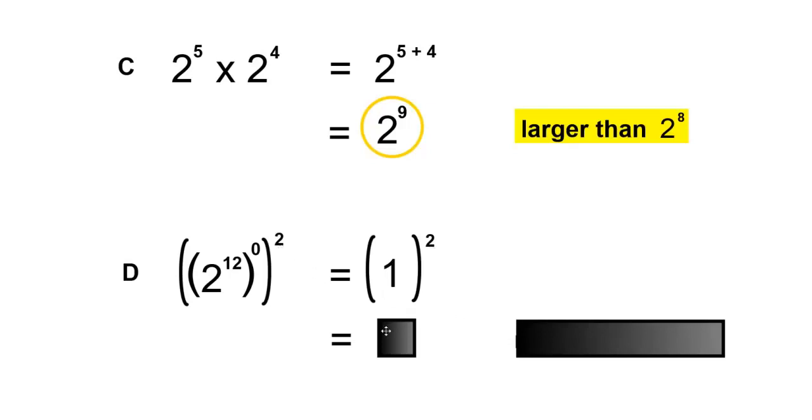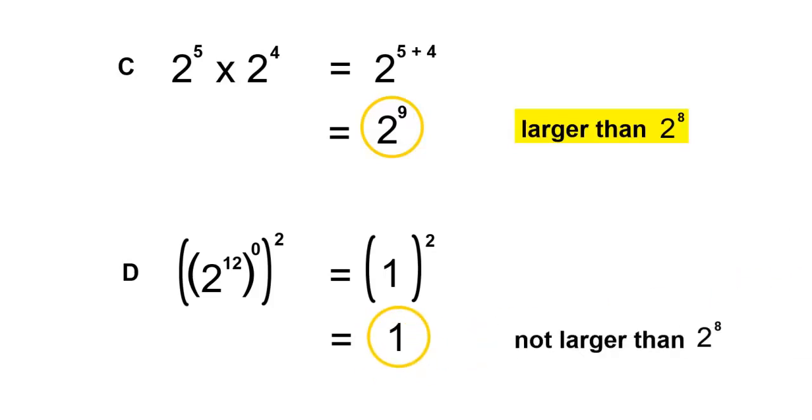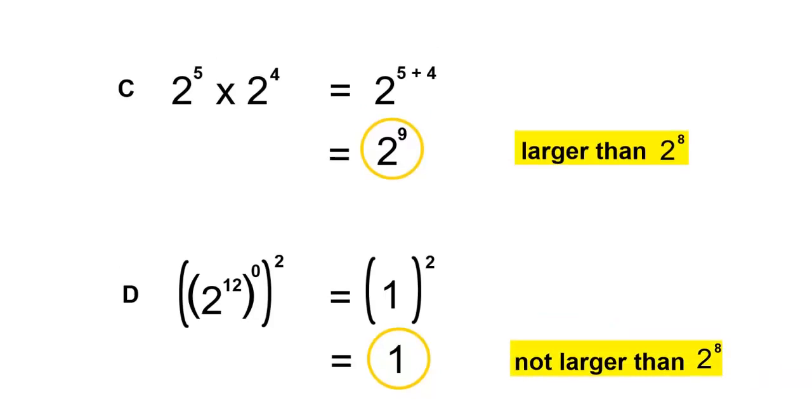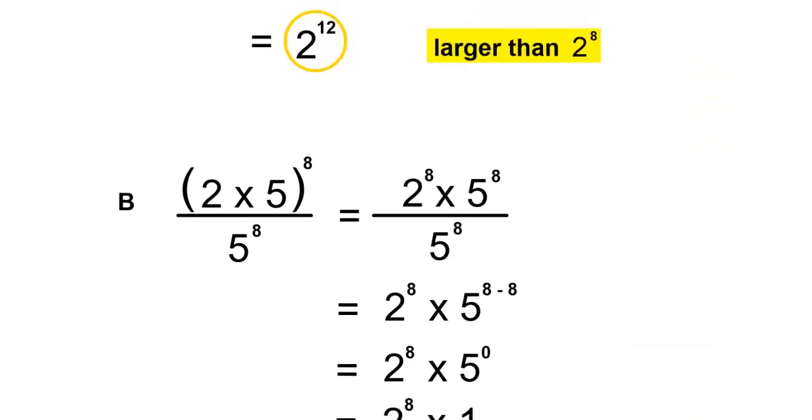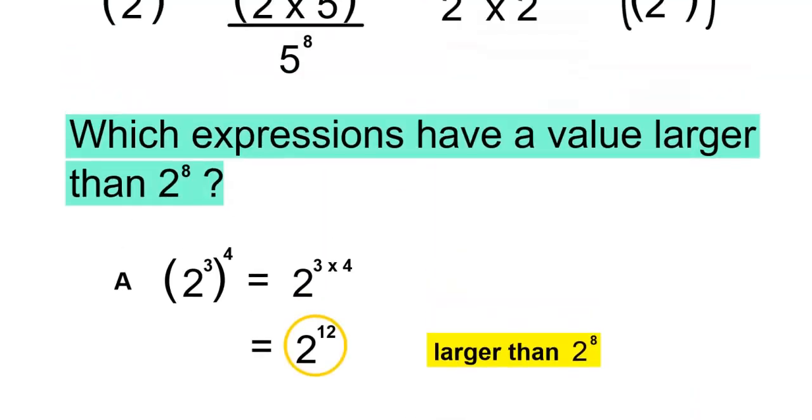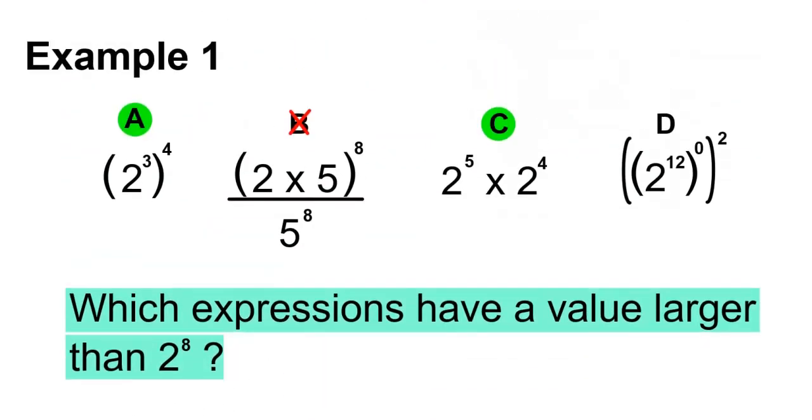And 1 to the power of 2 is still 1. And the answer of 1 is not larger than 2 to the 8. So D is also incorrect.